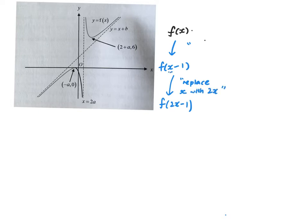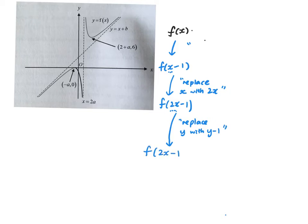We can see x minus 1 becomes 2x minus 1. Then after that, the next step is to add a 1 — this is replacing y with y minus 1. With that we actually get f(2x minus 1) plus 1.